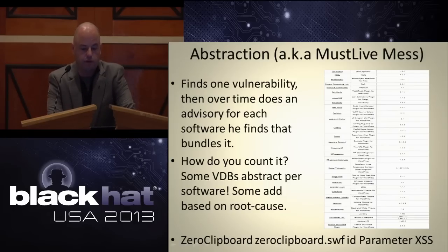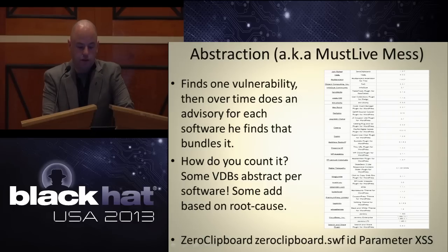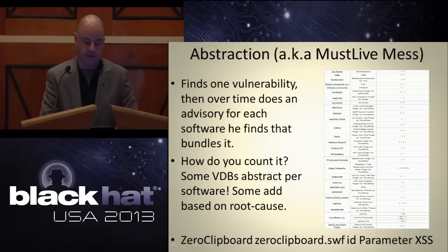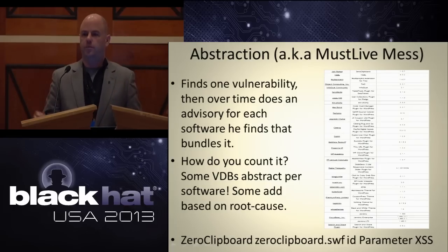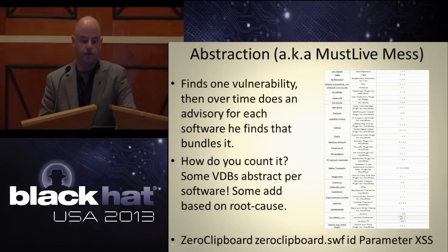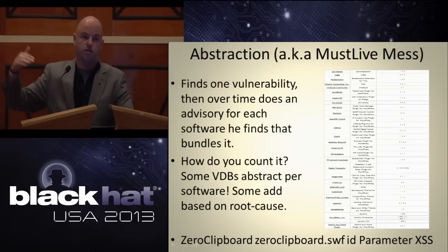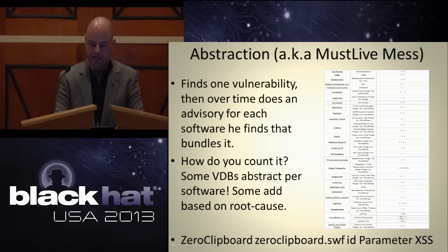Abstraction bias — a good example. If anyone knows Mustlive, he likes publishing advisories for the same vulnerability in the same software. That convoluted chart you're not even supposed to read — that's one vulnerability, but also about 12 of his advisories, because that same thing is used in so many WordPress plugins. But what do we see? A new vulnerability in WordPress every other day. We have to go figure out where the root cause is. Some VDBs like OSVDB say no, that's all one vulnerability and list it once. Other VDBs say it affects different products, so they extract on that. Now you have a huge swing in stats depending on the source you use.